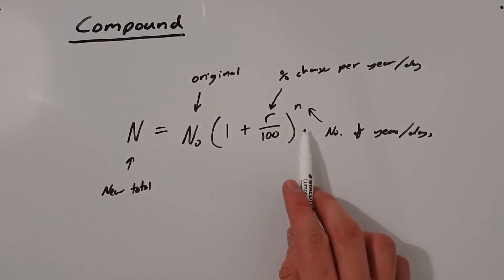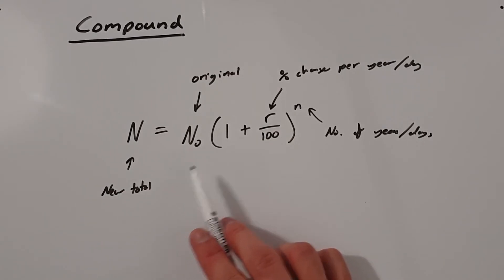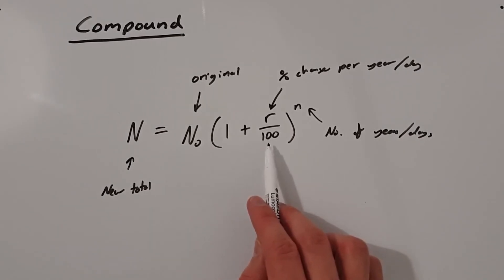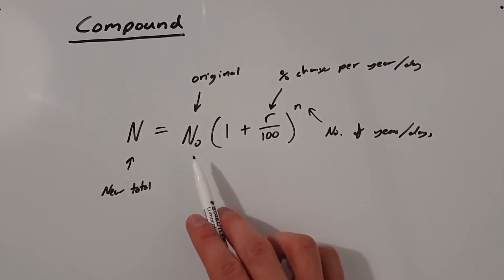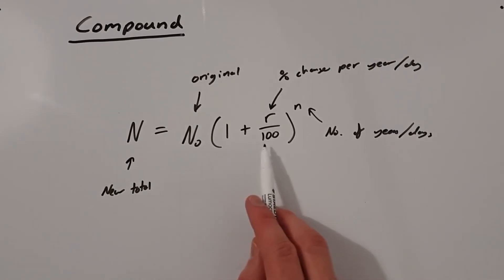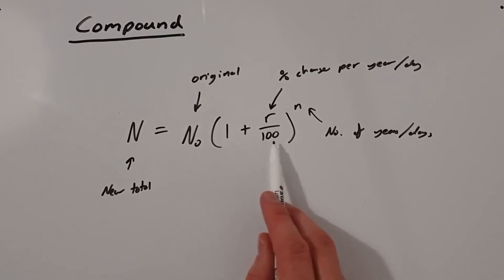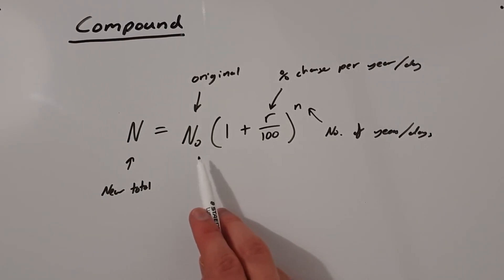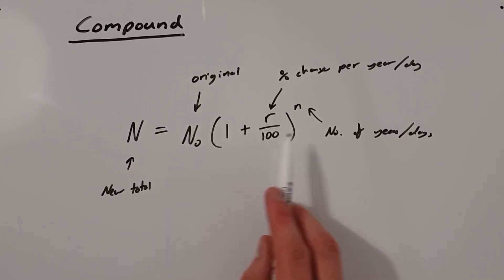The reason we have the power is to represent the number of years or intervals between our original payment and our new total. What we're effectively doing is taking our percentage change as a decimal and multiplying by it the number of times we want. So say we increase something by 10% — this becomes 1.1 — we multiply by 1.1, get a new number, multiply that by 1.1 again, and keep doing this the number of times given by our power.